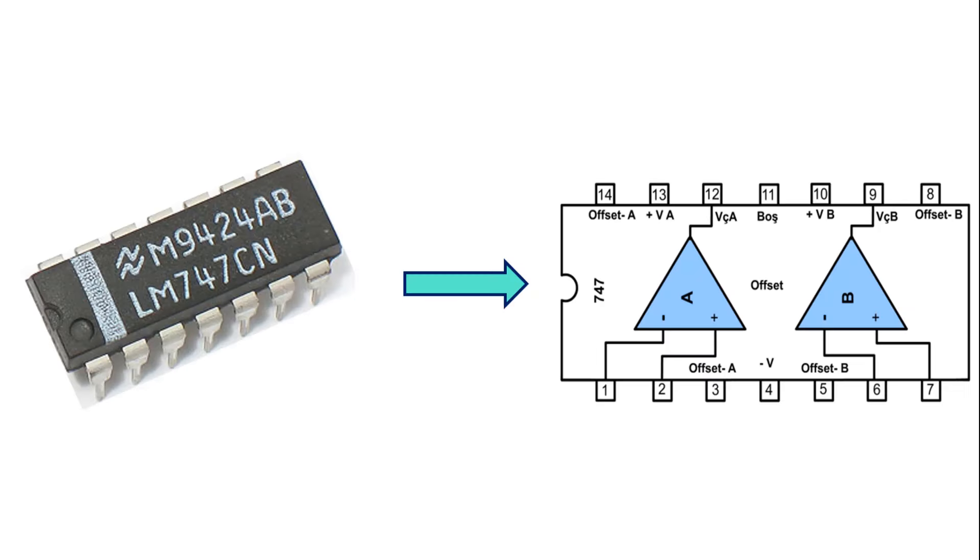Here you can see the LM747 integration with two LM741 operational amplifiers. Separate terminals are used for each operational amplifier, and only the negative supply voltage is used in common. Again, there are separate terminals for the input unbalanced voltage adjustment of each operational amplifier.